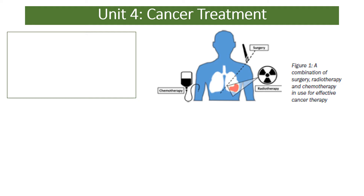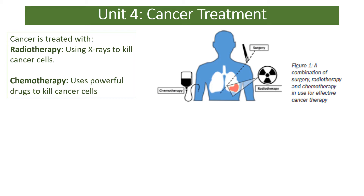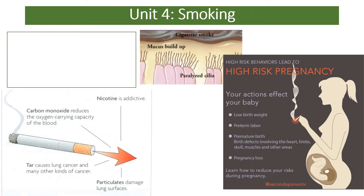Cancer can be treated through two main methods: radiotherapy, which uses X-rays to kill cancer cells, and chemotherapy, which uses powerful drugs to kill cancer cells. Note that chemotherapy uses powerful drugs — not simply 'chemicals' — to kill cancer cells. One of the key risk factors of cancer is smoking.